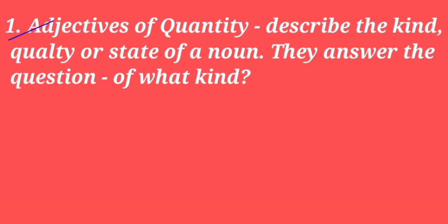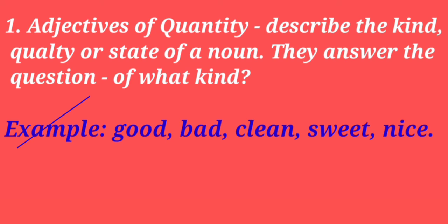The first kind is adjectives of quality. These describe the kind, quality, or state of a noun. They answer the question 'of what kind?' — giving us information about the quality of a noun or pronoun. Examples include: good, bad, clean, sweet, nice. In sentences: 'Maria is a good girl,' 'It is a clean city,' 'These mangoes are sweet,' 'It is a nice book.'